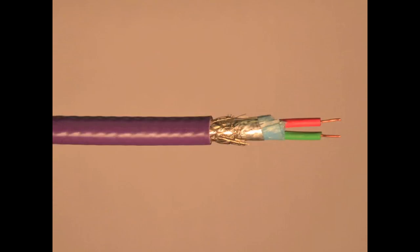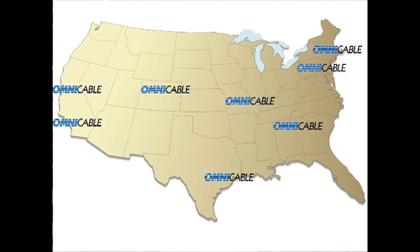Now that we have some knowledge of the Field Bus system, we can talk about PROFIBUS cables. PROFIBUS cables are specifically designed to work within PROFIBUS systems, and are designed and manufactured to meet specific requirements such as process automation, factory automation, safety systems, and motion control. OMNI Cable has a wide variety of PROFIBUS cables available in all ten of our locations nationwide.